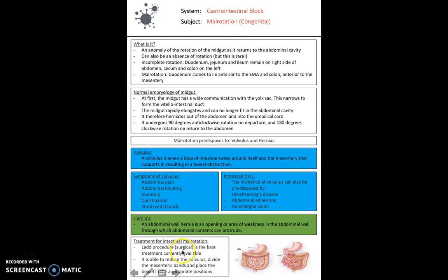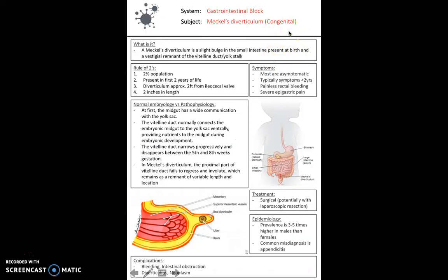The Ladd procedure is able to reduce volvulus as well by dividing the mesenteric band and placing the bowel into the appropriate position. Next is another congenital abnormality: Meckel's diverticulum, which results in a small bulge in the small intestine present at birth. It's a result of a vestigial remnant or failure of obliteration of the vitelline duct or yolk stalk.